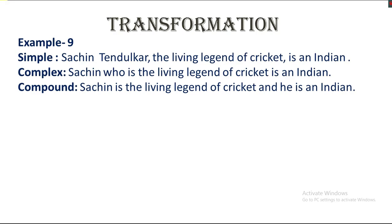Then example number nine. Simple — Sachin Tendulkar, the living legend of cricket, is an Indian. You can see here 'the living legend of cricket' is inserted between two commas — this is called a noun in apposition. Whenever you get a noun in apposition in a sentence, you need to use a relative pronoun to make it a clause. Complex — Sachin, who is the living legend of cricket, is an Indian. Compound — Sachin is the living legend of cricket and he is an Indian. So, a noun in apposition has been turned into an adjective clause.